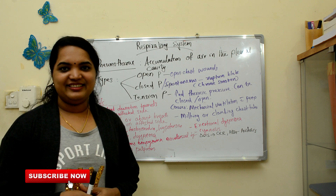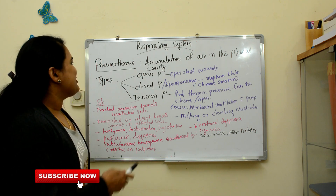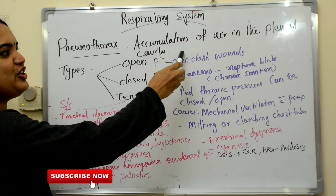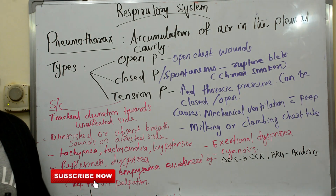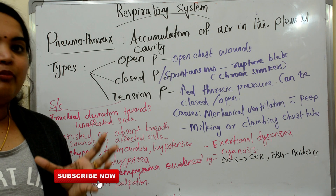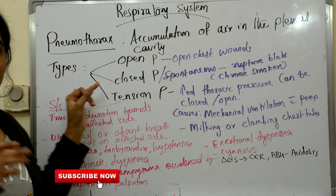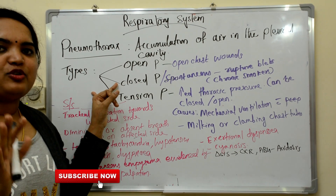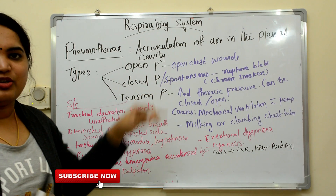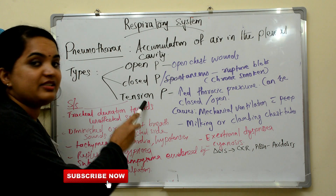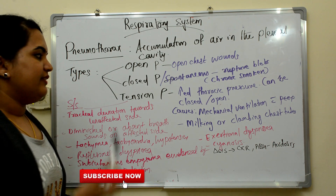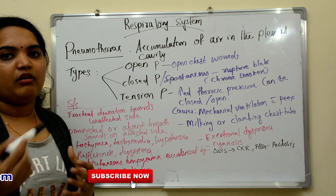Pneumothorax is the accumulation of air in the pleural cavity. We have mainly three types: the first one is open pneumothorax, the second one is closed pneumothorax, and the third one is tension pneumothorax. For the prometric section, tension pneumothorax is more important.